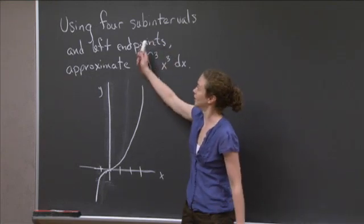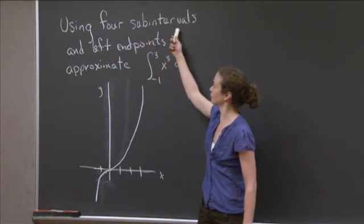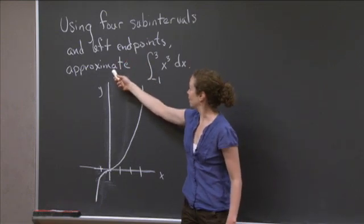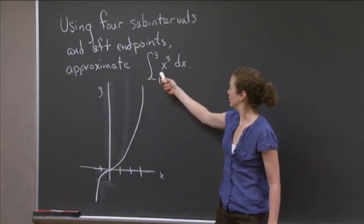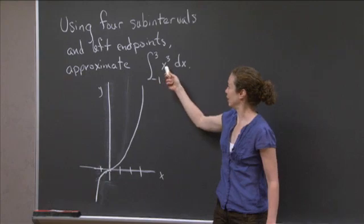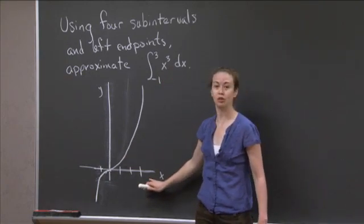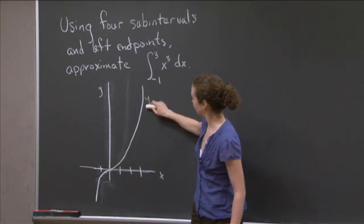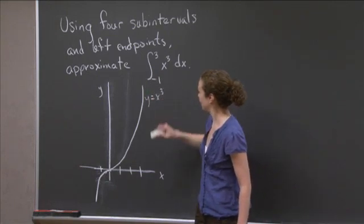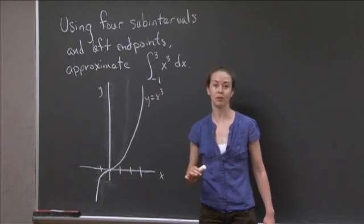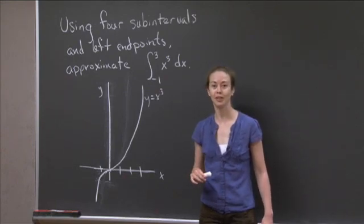So the problem is the following. We want to use four subintervals and left endpoints to approximate the following definite integral, the integral from minus 1 to 3 of the function x cubed. And I've drawn a rough sketch of what y equals x cubed looks like to help you out as a starting point. So why don't you use the four subintervals and left endpoints to approximate the definite integral? Then I'll come back and show you how I do it.